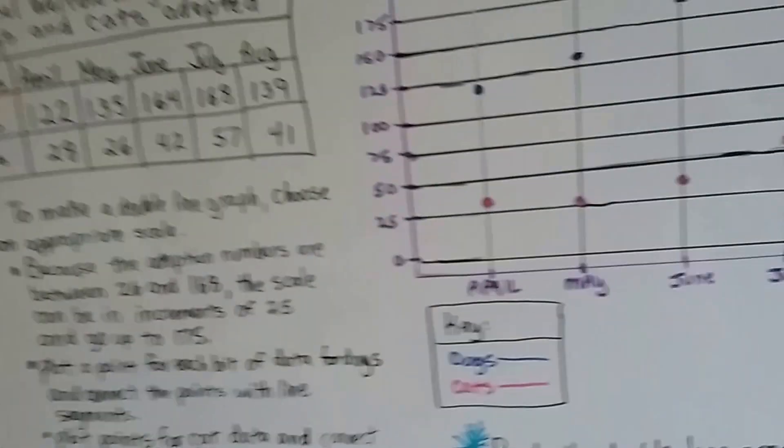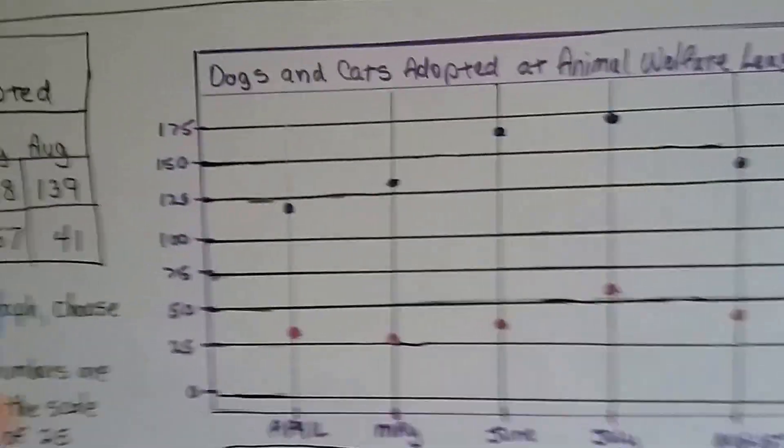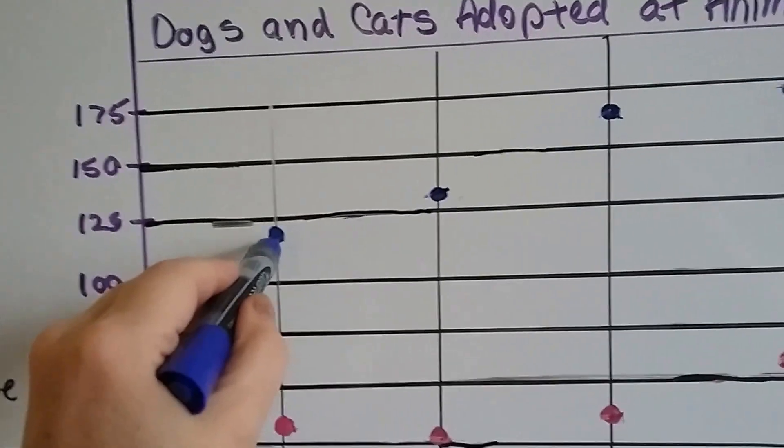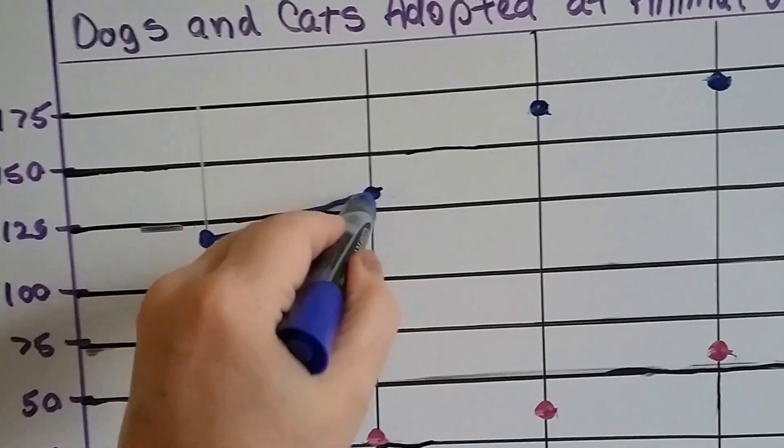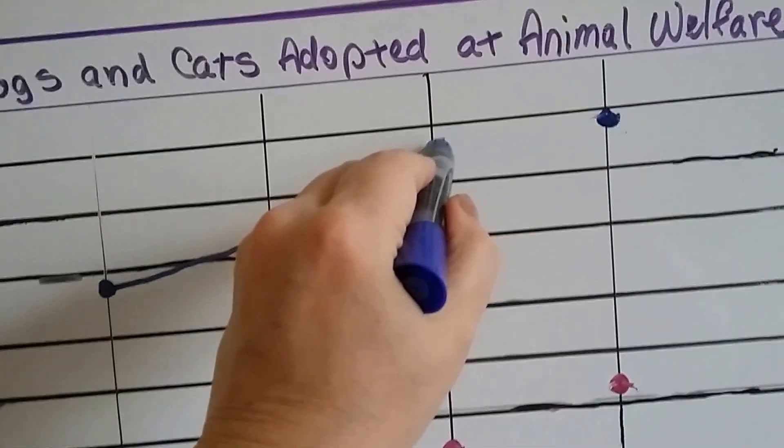Now what we do is connect each of these points with a line segment. That way we can see the trend of what's happening.